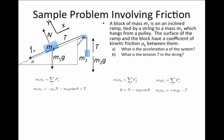For mass two, mass two times acceleration in the x direction equals M2g minus tension.